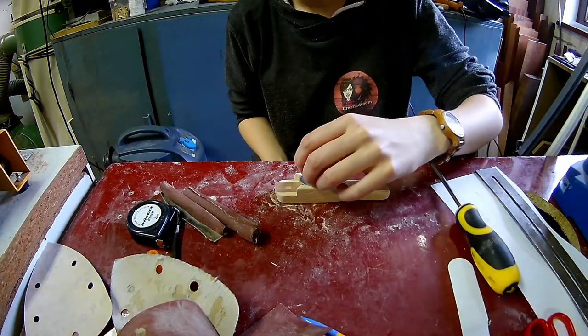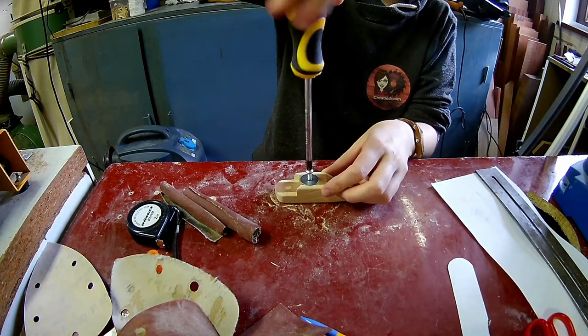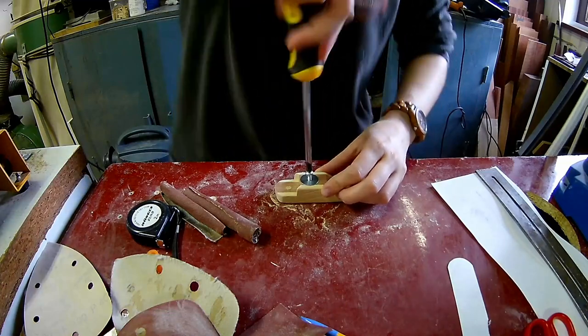Use a screw to keep the washer in place. And finish with some mineral oil. Now you're ready to use your bottle opener.